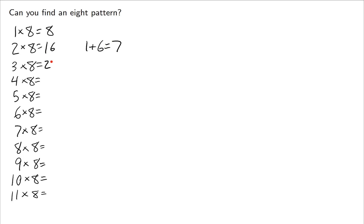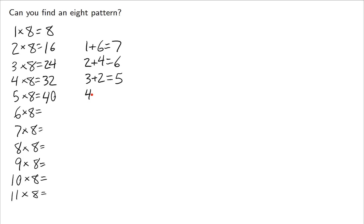3 times 8 is 24, and 2 plus 4 is equal to 6. 4 times 8 is 32, and 3 plus 2 is 5. At this point you might start seeing the pattern — it goes 8, 7, 6, 5 — and you might predict you're going to get 4 in the next one. 5 times 8 is 40, and 4 plus 0 is 4.